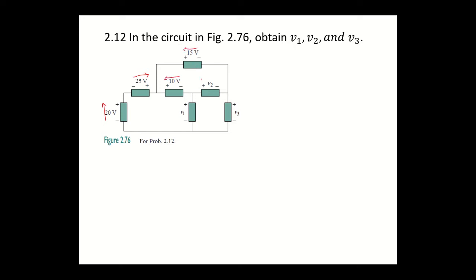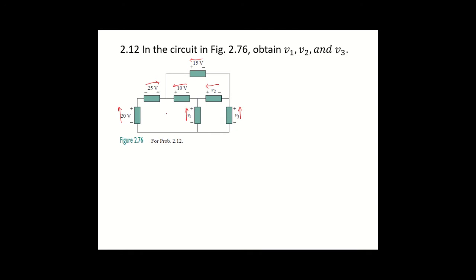From negative to positive, let us create a loop. This would be your loop 1, loop 2, and loop 3.